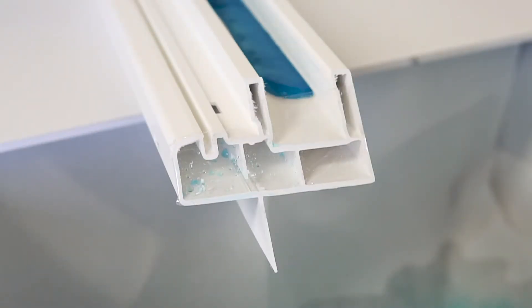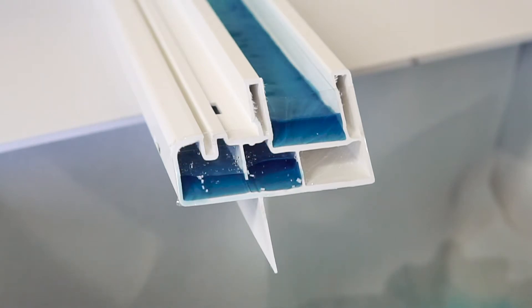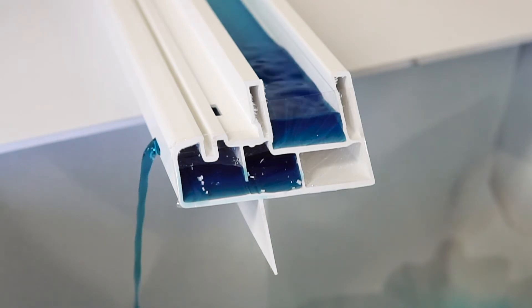When the exterior of the window gets wet, the water flows to the track or sill. Gravity driven water flows through the track and out the front of the frame through the weep hole.